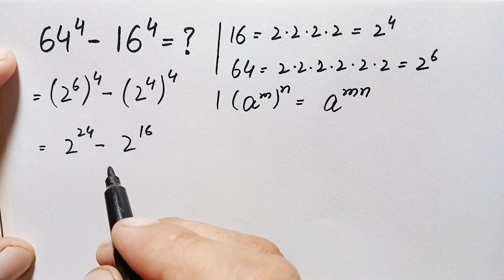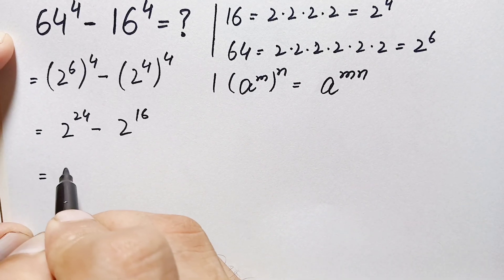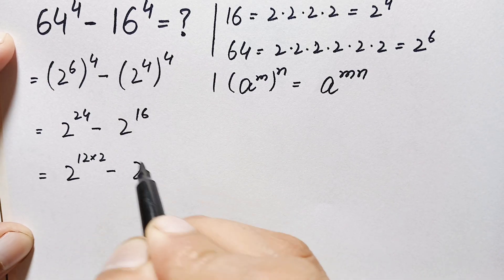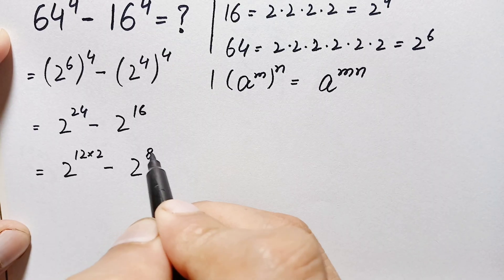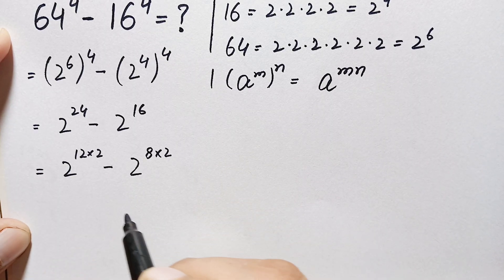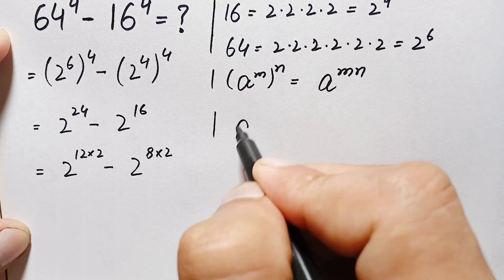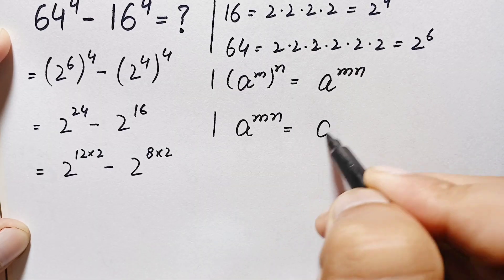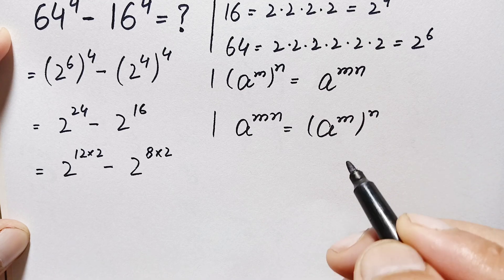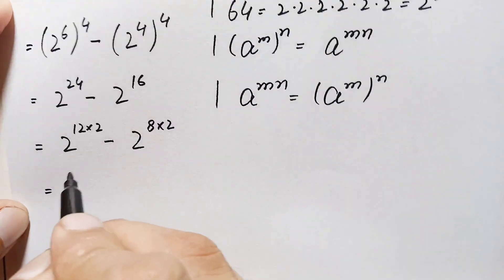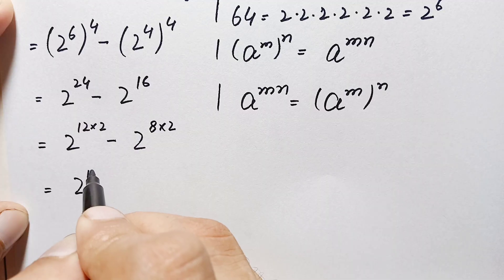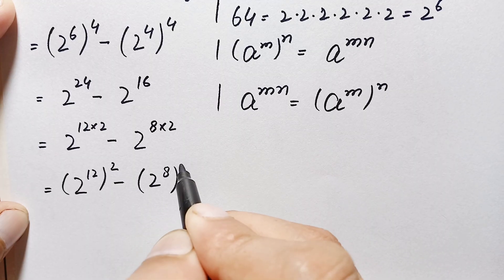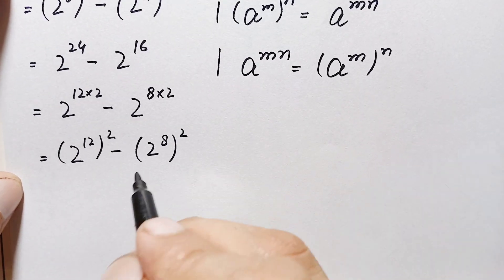Next, we rewrite these two powers. 2 raised to power 24 can be written as 2 raised to power 12 times 2, which is 24. And 2 raised to power 16 can be written as 2 raised to power 8 times 2, which is 16. We apply another exponential identity: a raised to power m times n equals a raised to power m, all raised to power n. So this becomes 2 raised to power 12, whole squared, minus 2 raised to power 8, whole squared.